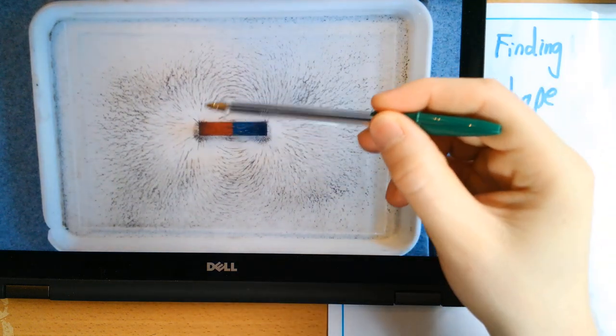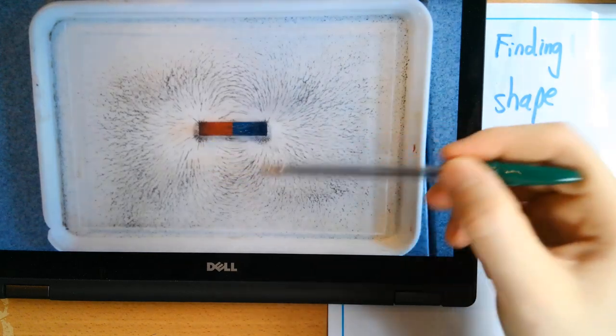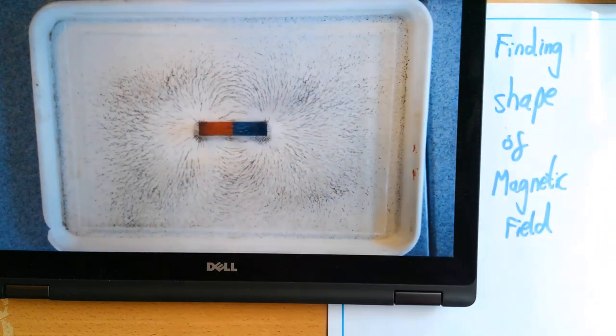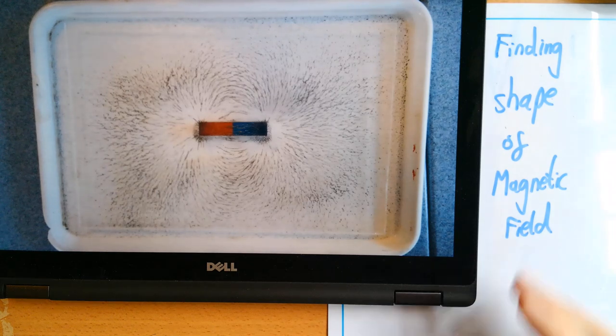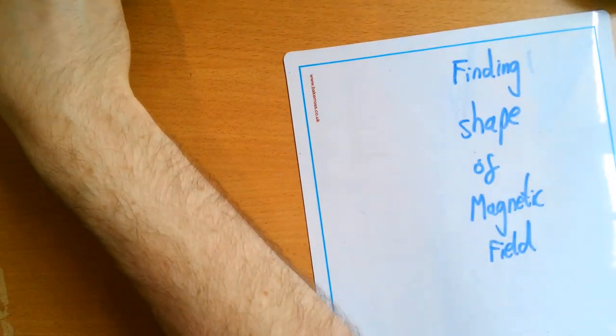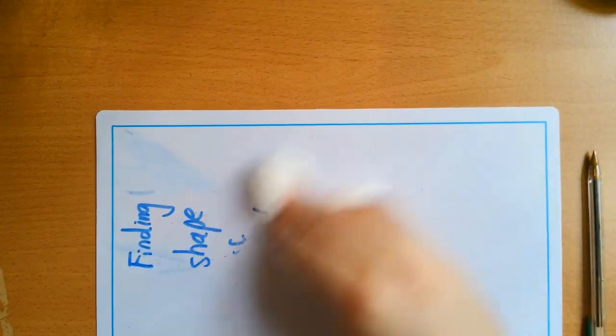And when you do that you can see these lovely clear lines start to appear, and these are the magnetic field lines around the bar magnet. So that is the method to find the shape of the magnetic field using iron filings. Now another method, if I put this to one side, is using a plotting compass.